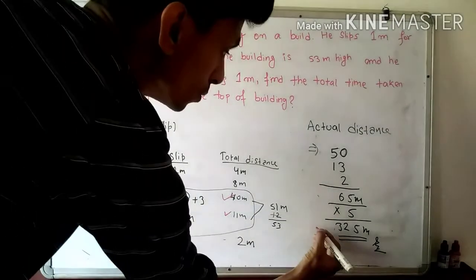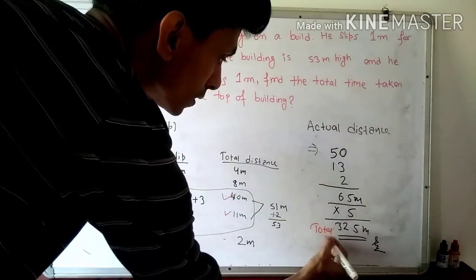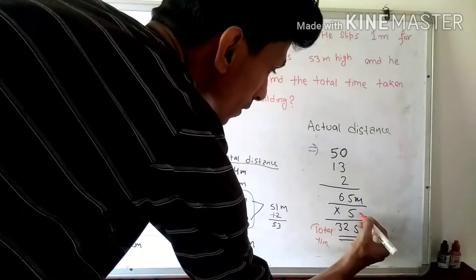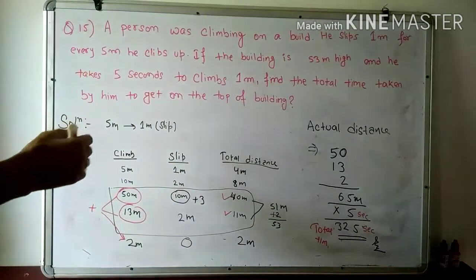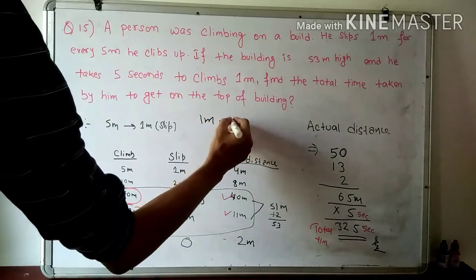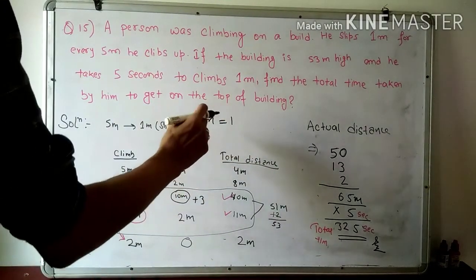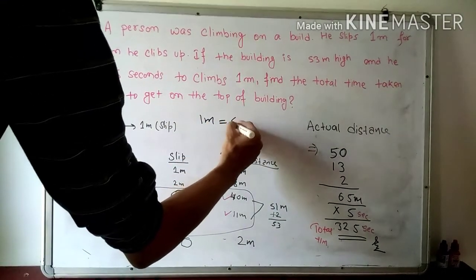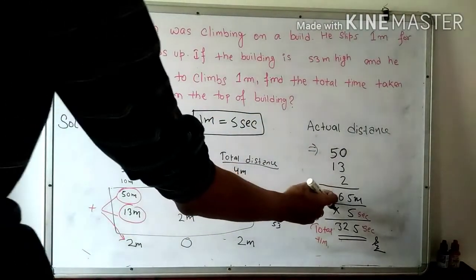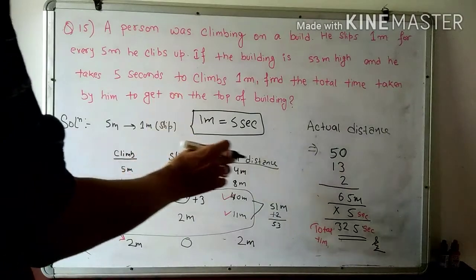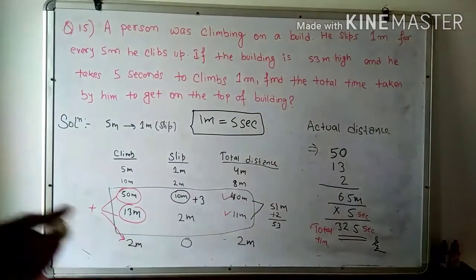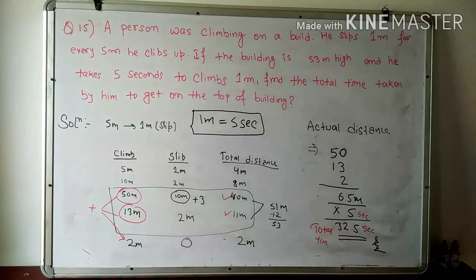This is your final answer. Total time — you have to find total time. The question states 1 meter distance is covered in 5 seconds. The total distance is 65 meters. So you have to convert it to seconds: 1 meter takes 5 seconds, so we multiply 65 meters by 5. Total is 325 seconds. 325 seconds is your final answer.